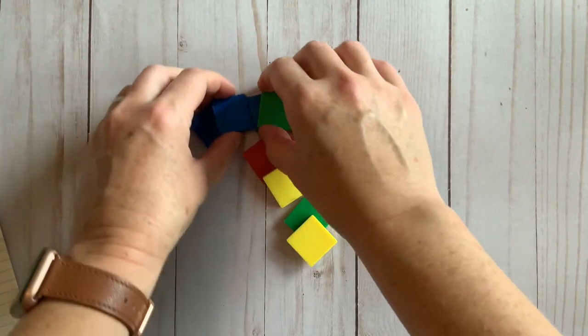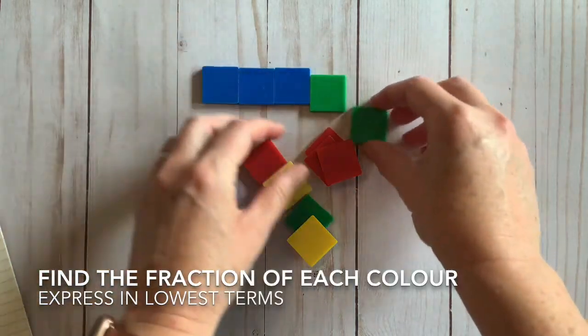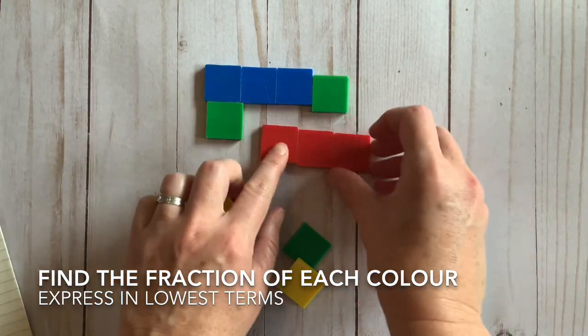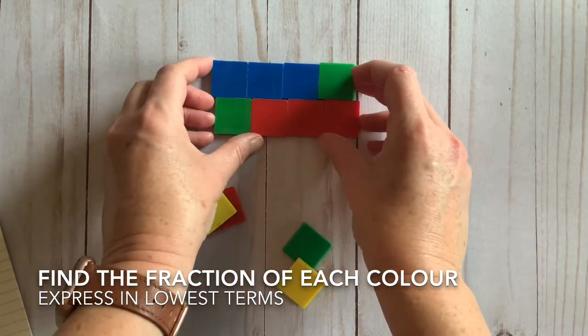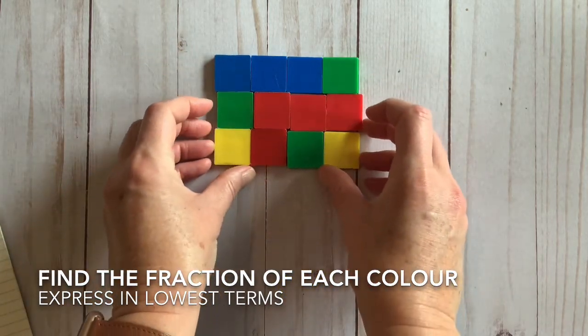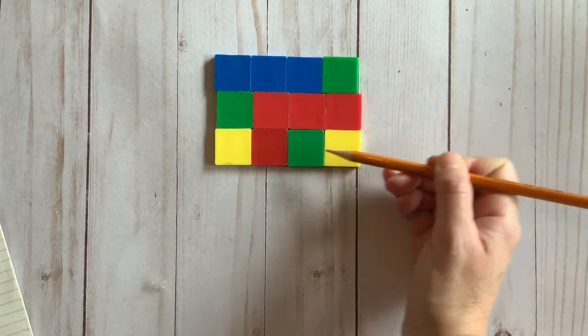Time for you to try one on your own. You're going to figure out the fraction of each color in this rectangle, and then simplify each fraction. Or in other words, express each fraction using an equivalent fraction in lowest terms. If you have some square tiles around, it can be very handy for helping you find these equivalent fractions.